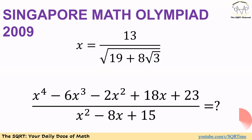Based on x, we want to evaluate the expression shown here. In this expression we have a fraction — for the numerator we have x to the power of 4 minus 6x cubed minus 2x squared plus 18x plus 23, and for the denominator we have x squared minus 8x plus 15. Before moving forward, make sure you pause the video to think about this problem.